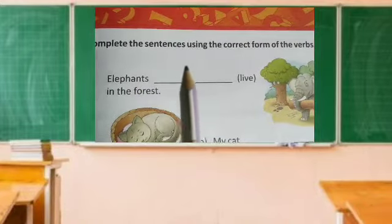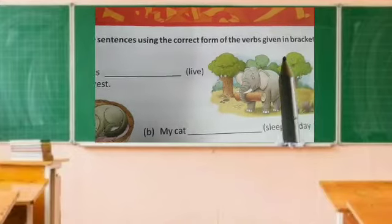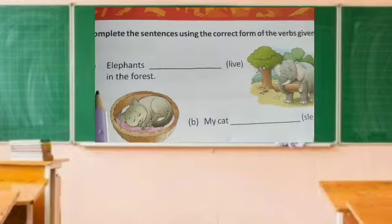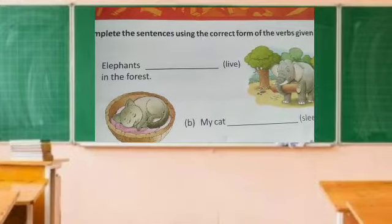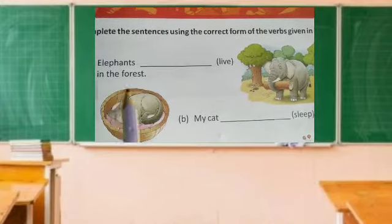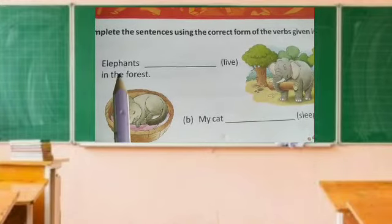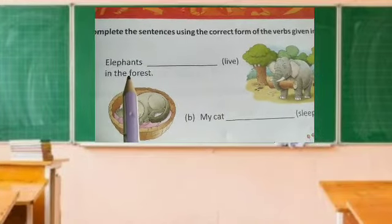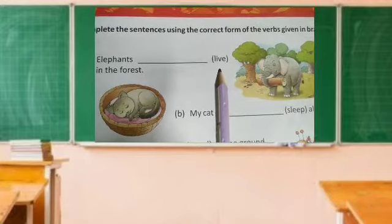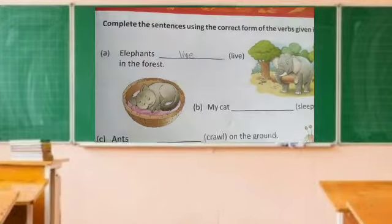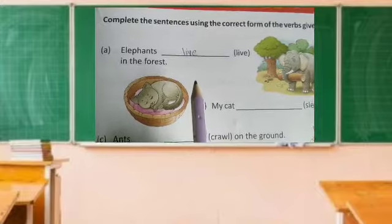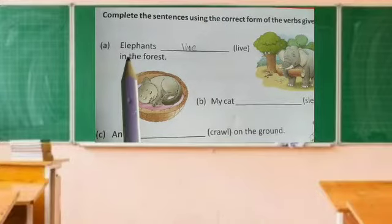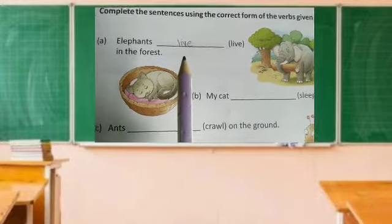Complete the sentences using the correct form of the verbs given in brackets. Let us begin. (a) Elephants dash in the forest. Elephants — is that singular or plural? Plural. So we will write 'live' — the verb without 's'. When the noun is in plural form, the verb will be without 's'.